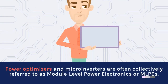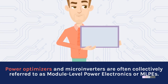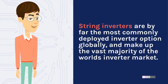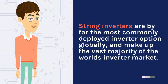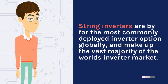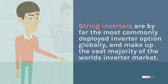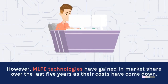Power optimizers and microinverters are often collectively referred to as module-level power electronics, or MLPEs. String inverters are by far the most commonly deployed inverter option globally, and make up the vast majority of the world's inverter market. However, MLPE technologies have gained in market share over the last five years as their costs have come down.